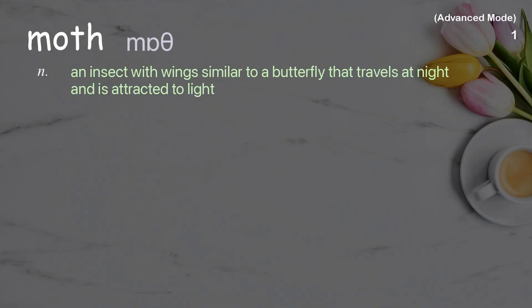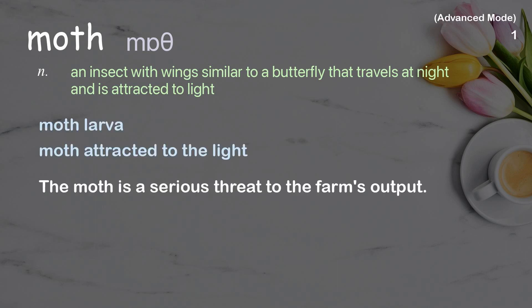Moth. An insect with wings similar to a butterfly that travels at night and is attracted to light. Examples: Moth larva. Moth attracted to the light. The moth is a serious threat to the farm's output.